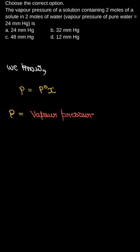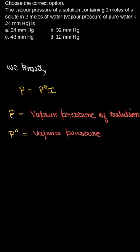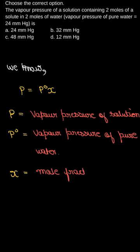Here P is the vapor pressure of solution which we need to calculate. P⁰ here is the vapor pressure of the pure solvent. Here the solvent is water, so it is of pure water. Now X is the mole fraction of the solute.